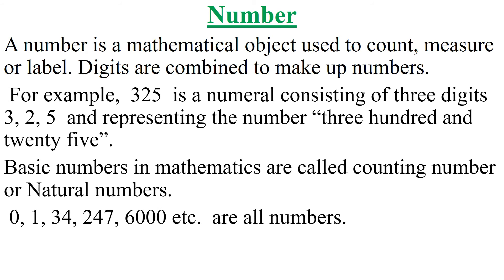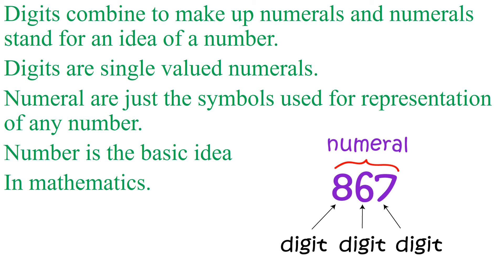Now basic numbers in mathematics are called counting numbers or natural numbers. 0, 1, 34, 247, 6000, etc. are all numbers.